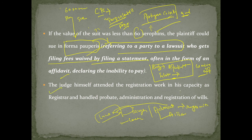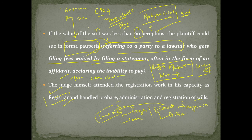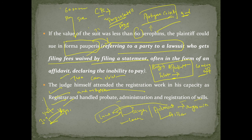The judge himself attended the registration work in his capacity as registrar and handled probate administration and registration of wills. So the judge had two roles: in court he would deliver justice, and as registrar he would handle administration and matters related to registration of wills, probate, and testamentary cases. The judge's role could shift from judge to registrar and back again.